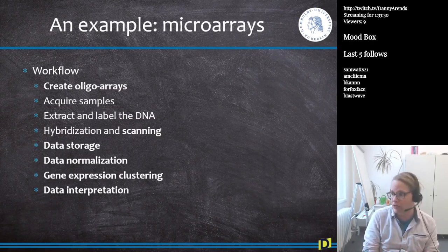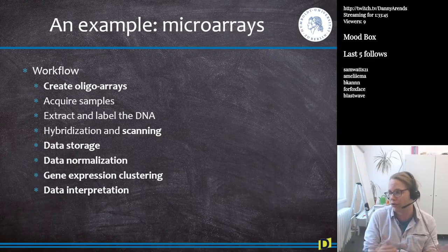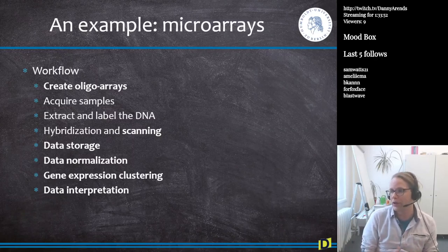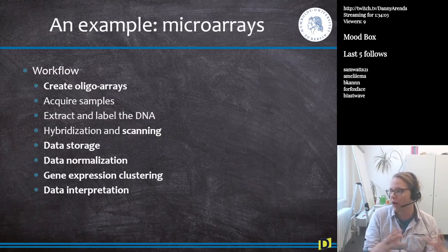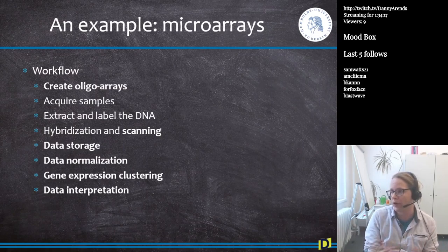The next step is data normalization. Statistics is used to get rid of unwanted variation — for example, there's an air bubble on one of the microarrays, or a hair got into the machine. After data normalization, the next step is gene expression clustering. Because we're measuring 20,000 genes, we're not interested in a single gene — we want to see if a whole pathway of genes comes up. If you think about plants, we might be interested in the glucosinolate pathway; in mice, perhaps the glucose pathway in the liver, or a brain pathway highly expressed in people with Alzheimer's versus those without.